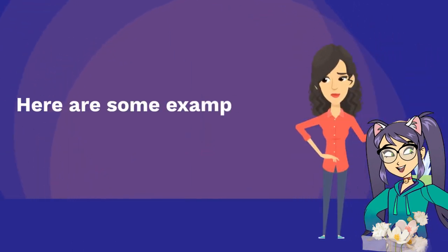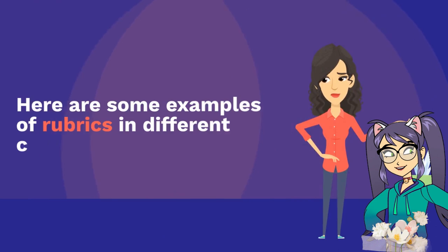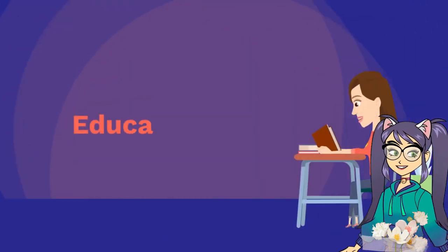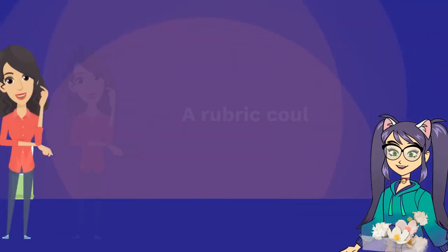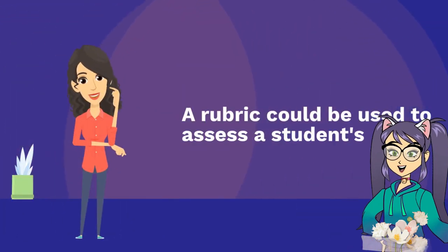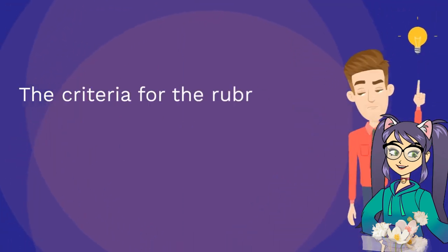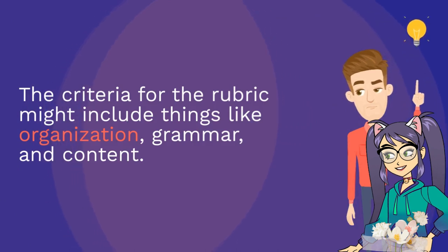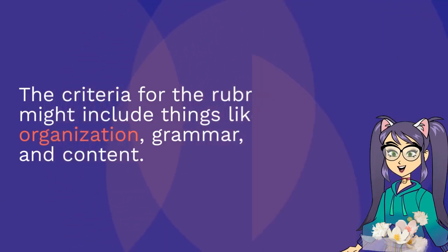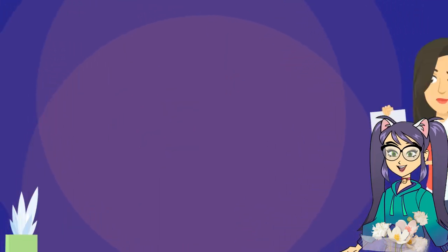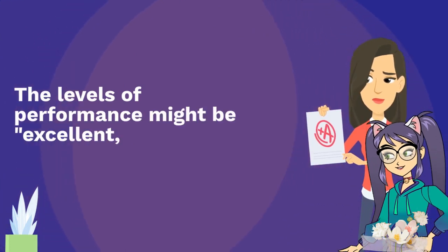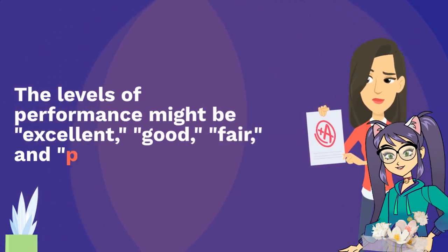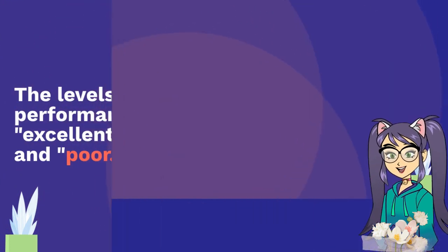Here are some examples of rubrics in different contexts. In education, a rubric could be used to assess a student's essay. The criteria for the rubric might include things like organization, grammar, and content. The levels of performance might be excellent, good, fair, and poor.